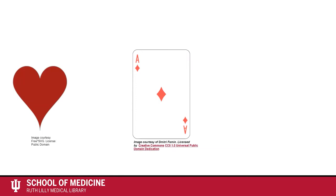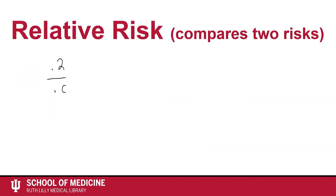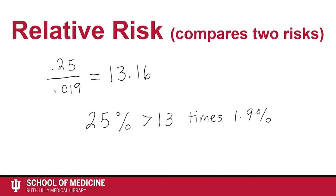What if we compared these two risks to each other? We would compare 25% to 1.9%. Let's do the calculation. We would take .25 and divide that by .019 in order to get the relative risk of 13.16. When comparing the two risks, we could say 25% is greater than 13 times 1.9%.